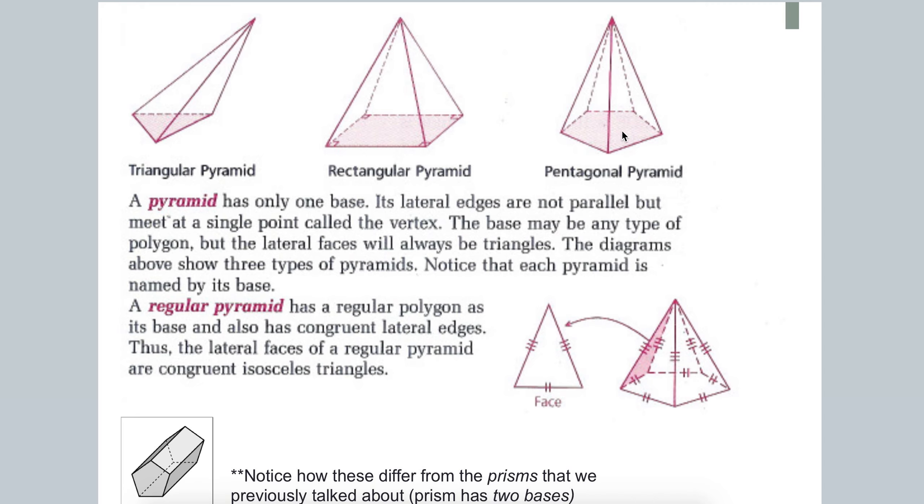So as you notice, this differs from what we just talked about, which are prisms, because a prism has two bases. In this case, we call it a pentagonal prism because the base is a pentagon.